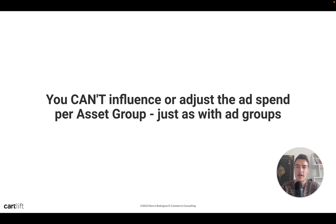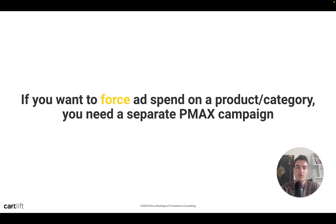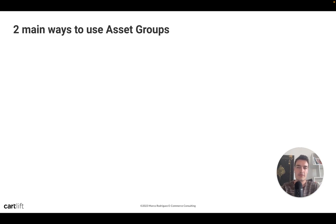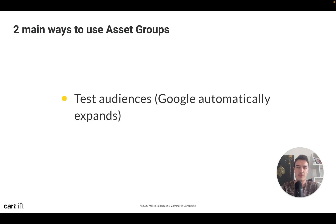You cannot adjust ad spend per asset group. With regular ad groups you can indirectly influence spend by setting different target ROAS goals per group, but with asset groups that's not possible. If you want to force spend on a specific product or category, you need a separate Performance Max campaign for it — because within one campaign, you can't control how Google allocates budget across asset groups.